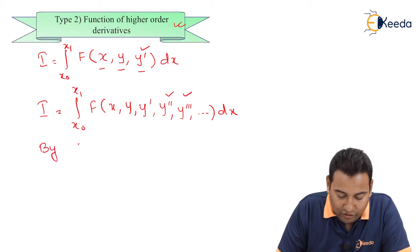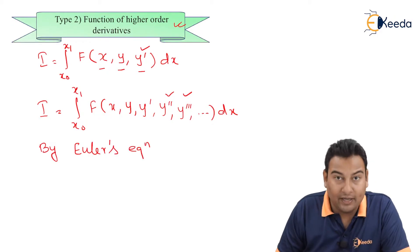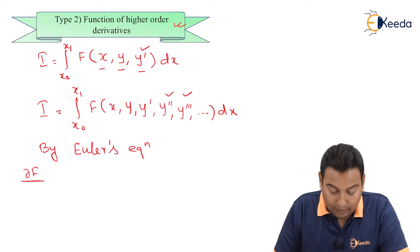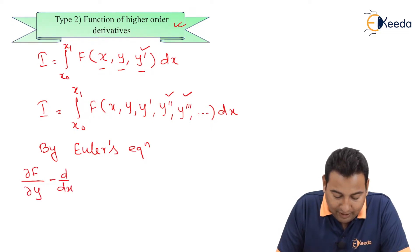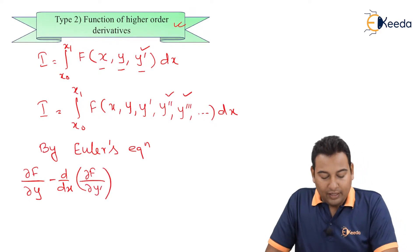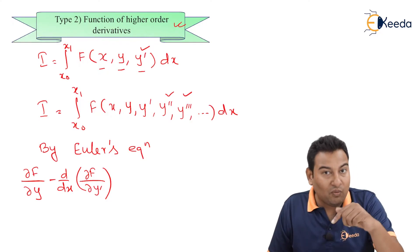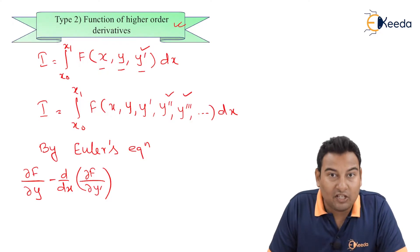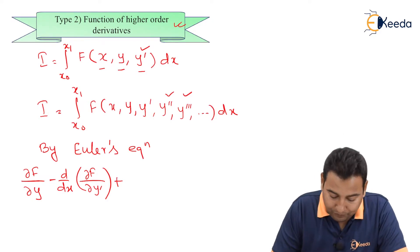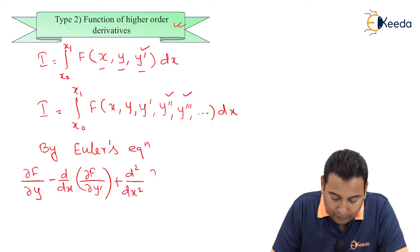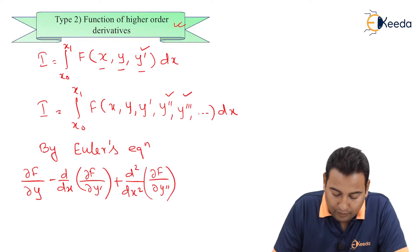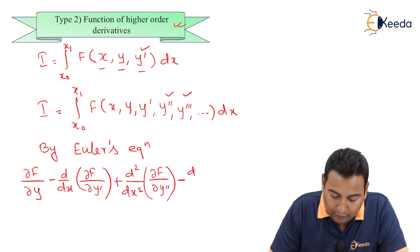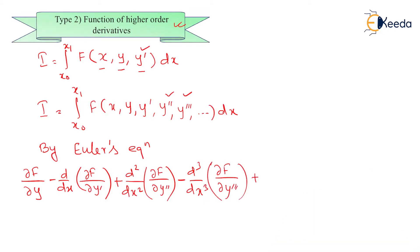Therefore by Euler's equation, the equation will be modified here. If you remember the first equation: ∂f/∂y minus d/dx of ∂f/∂y dash - there was only y dash. Now it will have y double dash also. It will be alternate plus minus in the formula: plus d²/dx² of ∂f/∂y double dash, then minus d³/dx³ of ∂f/∂y triple dash, plus dot dot dot, equal to zero. This is the modified Euler's equation for handling function of higher order derivatives.